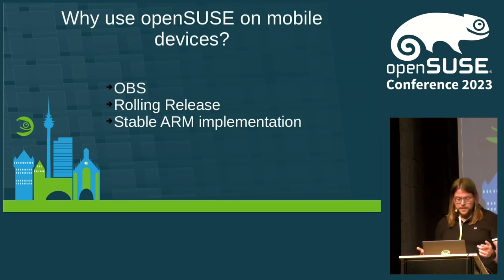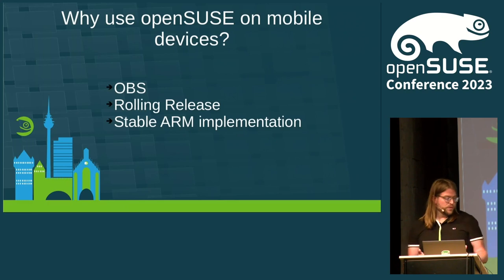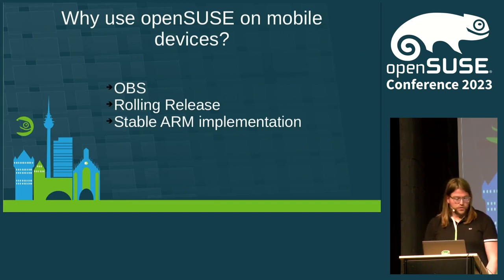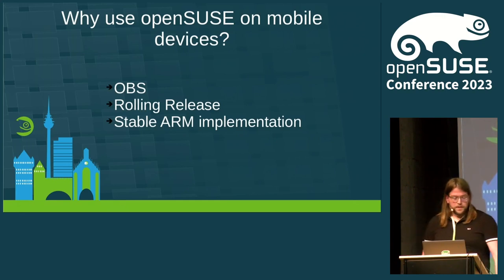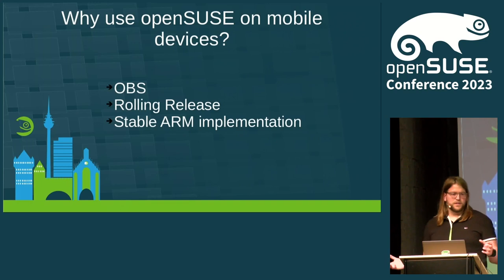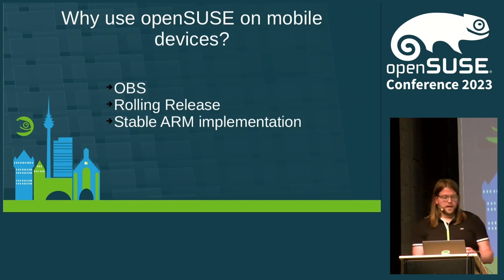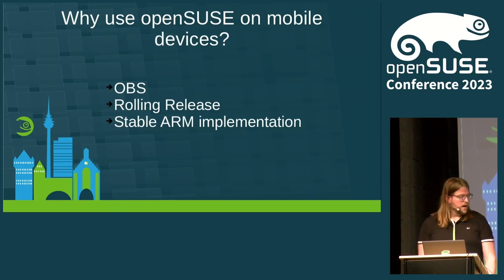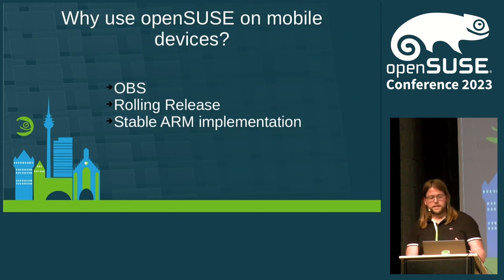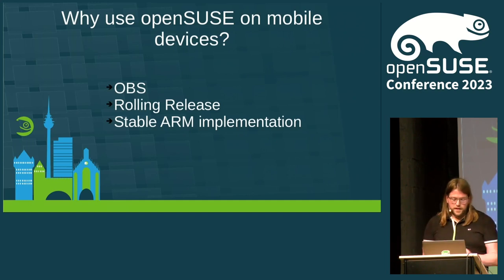One thing that has been a big part of my life was OBS. I create a lot of RPMs, and that platform with the stability of the ARM infrastructure made it easy to implement this. The rolling release of Tumbleweed was great for me, because in one week there were a lot of changes for these platforms. And don't forget the BTRFS filesystem, which allows us to use Snapper and get rollbacks if something fails.